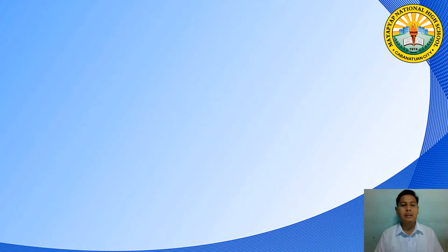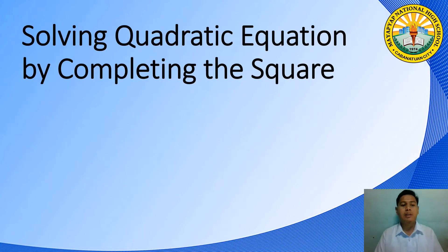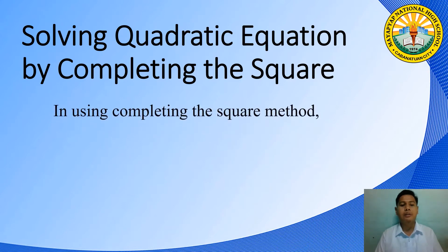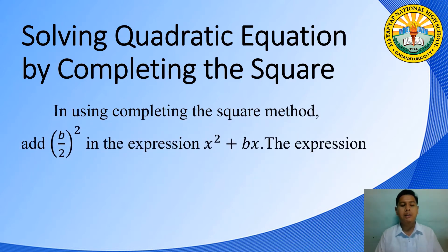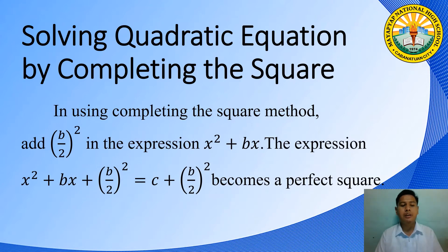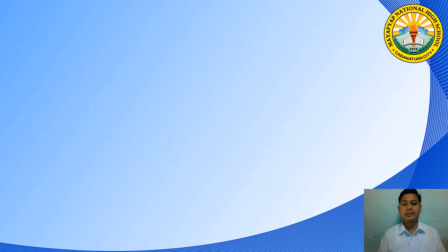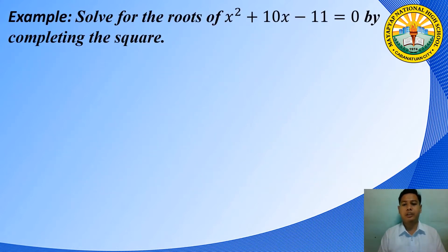We are done with the second method, solving quadratic equations by factoring. The third method is solving quadratic equations by completing the square. In using the completing the square method, add the quantity b over 2 squared to the expression x squared plus bx. The expression x squared plus bx plus b over 2 squared becomes a perfect square. Let's use the same sample equation from the previous method, since we can also solve it using completing the square.